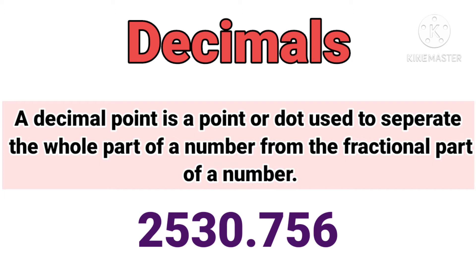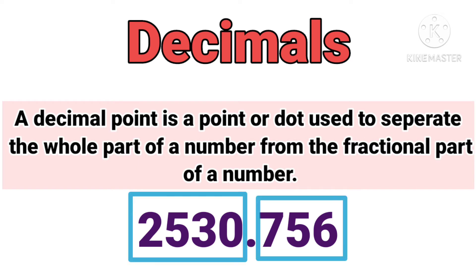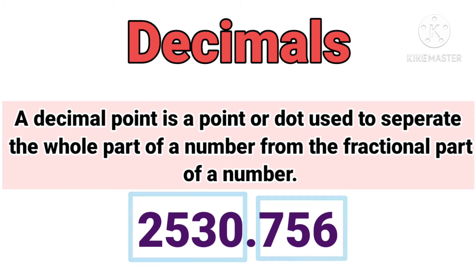So, what is decimal? A decimal point is a point or dot used to separate the whole part of a number from the fractional part of a number. Decimal point, dot, hum numbers ko separate karne ke liye use karte hai. To number ko separate karne ke liye — hum whole part aur fractional part, dono ko alag-alag separate karne ke liye hum numbers ke beech mein dot ko use karte hai.